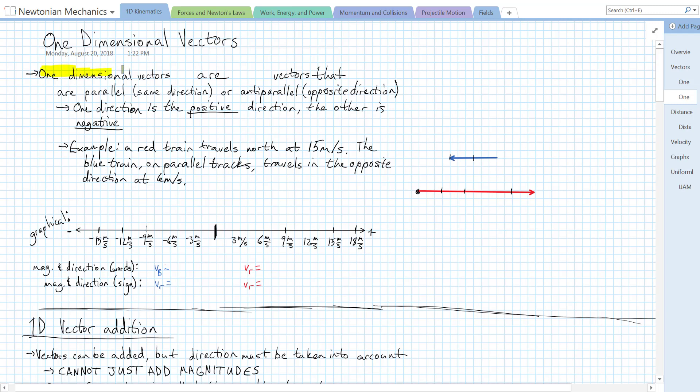We know that vectors have a magnitude and a direction, and one-dimensional vectors are just vectors that are all pointing either parallel to each other or antiparallel to each other. So same direction or opposite direction, they all point along a line.